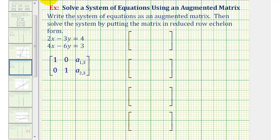Looking at the first equation, the first row of the matrix will be two, negative three, four. And the second row will be four, negative six, three.